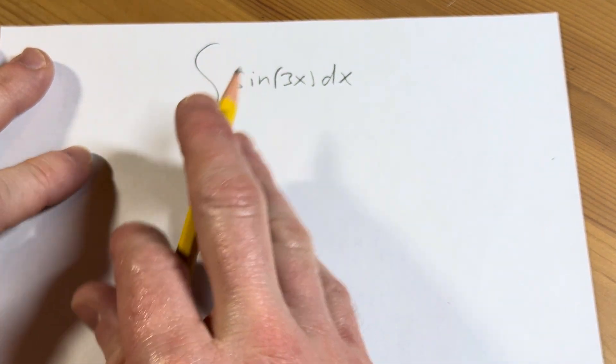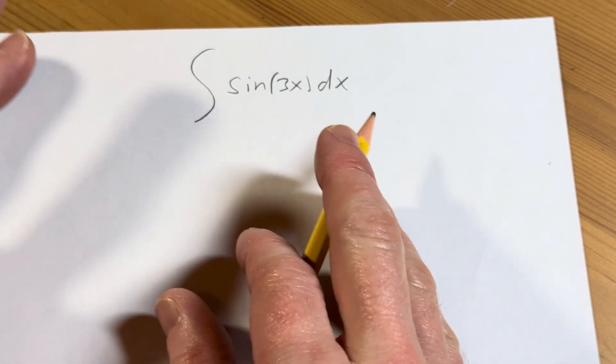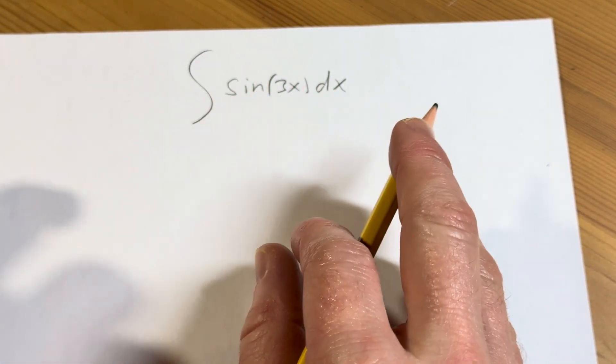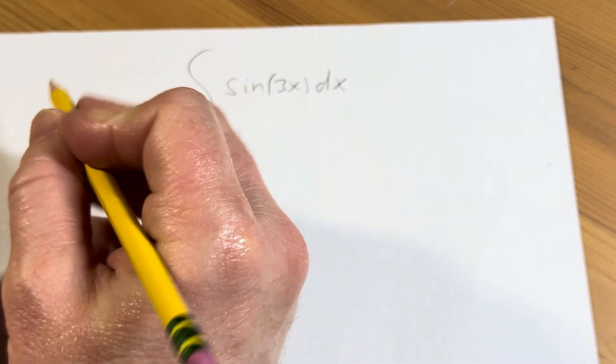So if it was just the sine of x, it would be easy, we could do it. You know, you can just think backwards. But it's not. It's a sine of 3x. So you can still do it in your head. However,